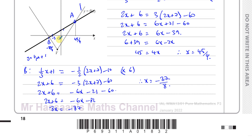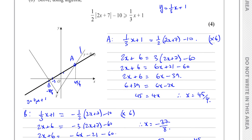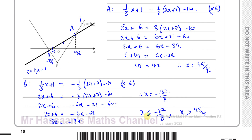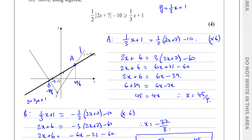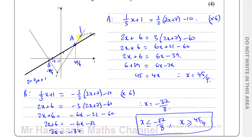So the modulus function is greater than or equal to the straight line Y equals a third X plus 1 when X is less than or equal to negative 87 over 8, and also when X is greater than or equal to 45 over 4. Those are the ranges of values of X for which the modulus function is above or equal to the straight line.